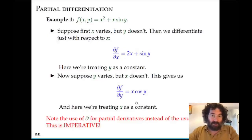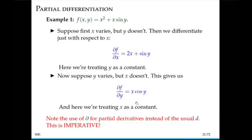One comment about notation: we use this round or curly d symbol for partial derivatives, which is very important to distinguish from the regular derivative that uses a normal d. The curly notation indicates that all other variables are held constant and we differentiate with respect to just one variable.